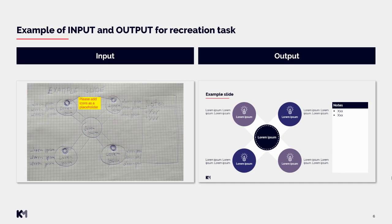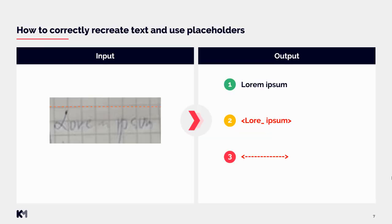Here we can see an example of input and output for a recreation task. In this case, we just regularly recreated the text and applied brush up. We also added icons as placeholders since that was the client's instruction. Now let's take a look at how to correctly recreate text and use placeholders. On the left side you can see our input — if you are able to fully read the text, then use case number one and simply retype the text, making sure it is 100% correct.